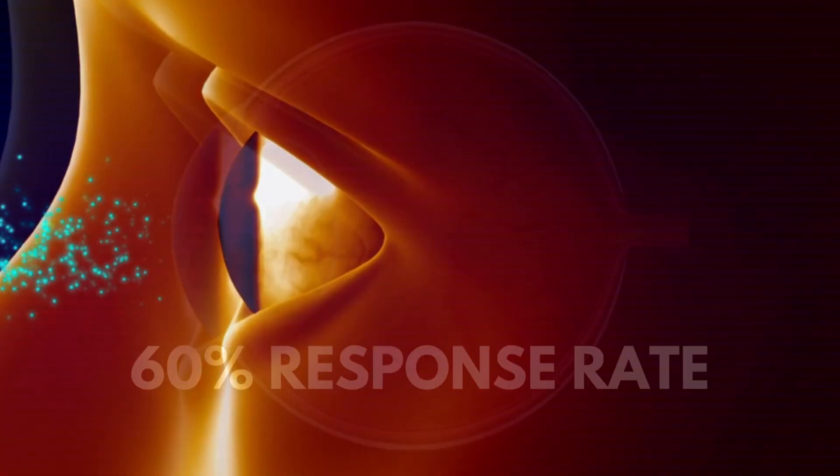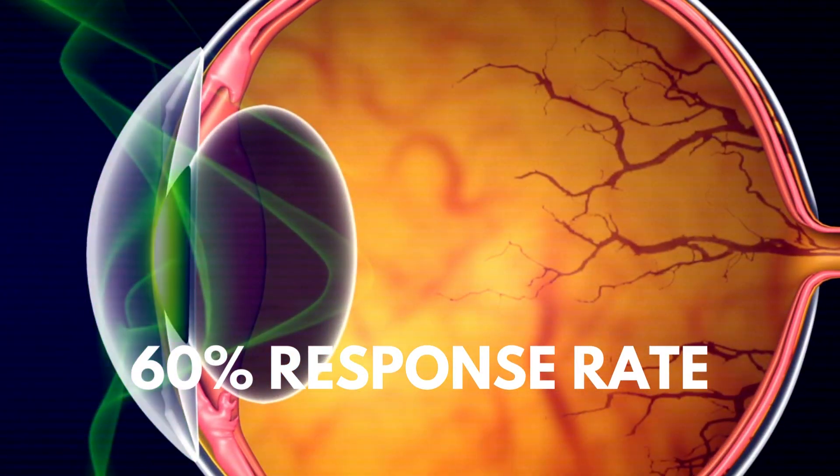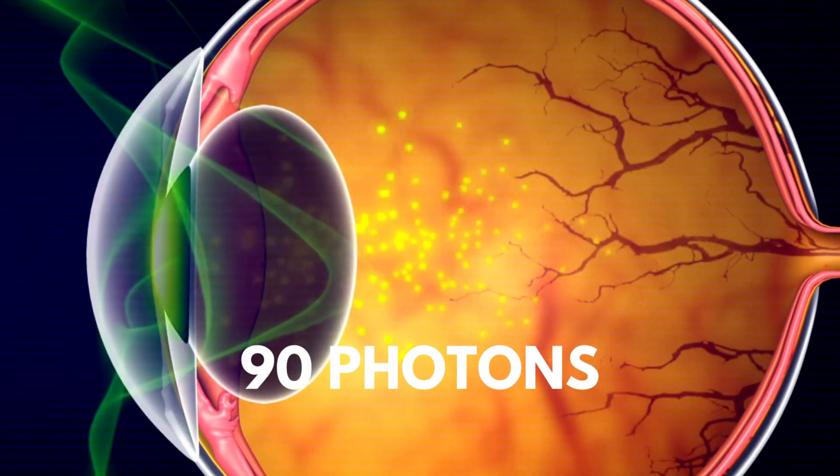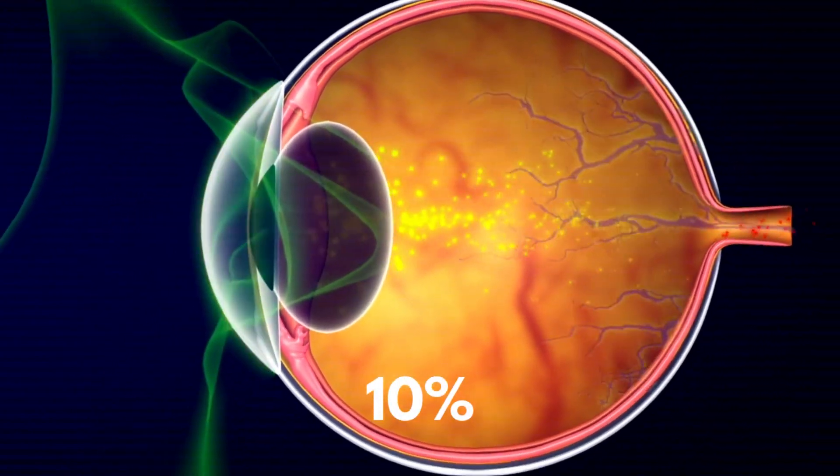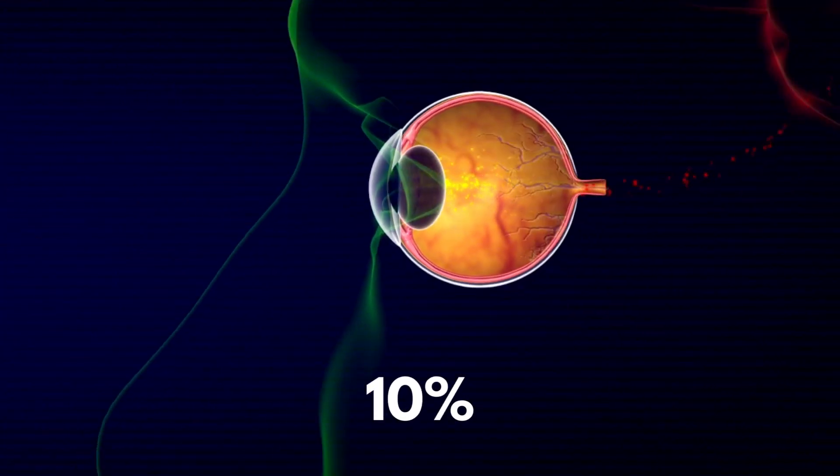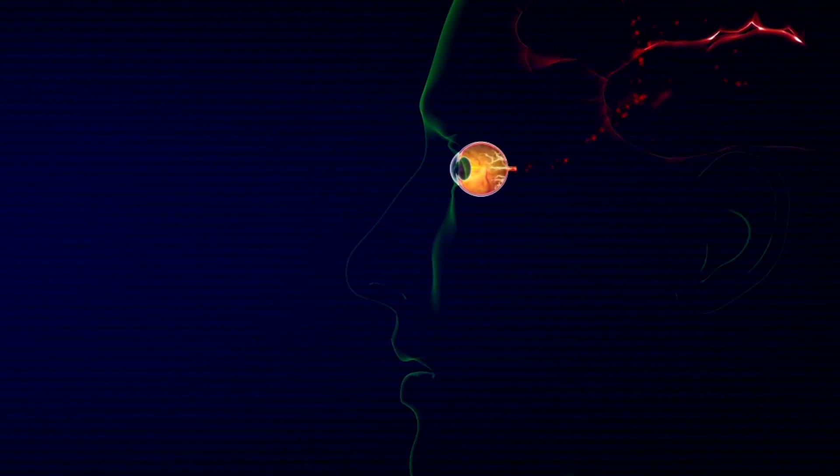Researchers found that for a 60% response rate to occur, approximately 90 photons must enter the eye. However, only around 10% of these photons actually reach the retina, suggesting that only around 9 photons are needed to stimulate the receptors.